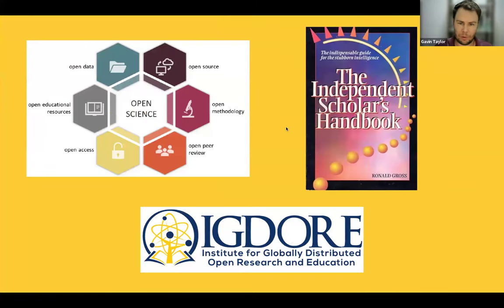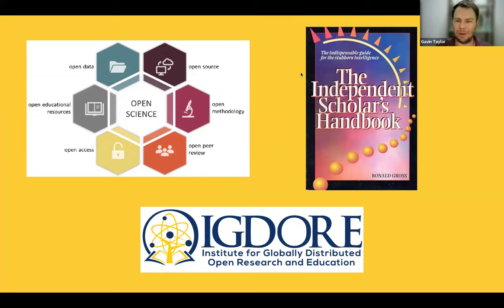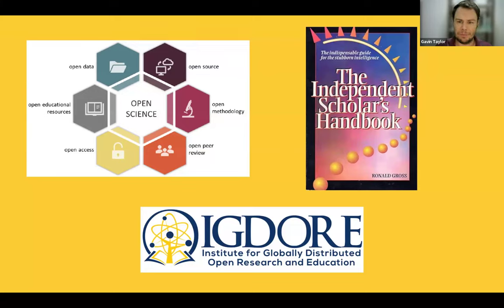I'm going to go over all of these. As noted, there are six aspects of open science and open source is really only one of them. I don't have a great introductory picture for independent research, but I have the cover of what is the first and possibly only book written on this topic — Ron Gross's book on independent scholarship from the early 1980s. And we'll talk about IGDOR at the end, as it aims to support both open science and independent researchers.